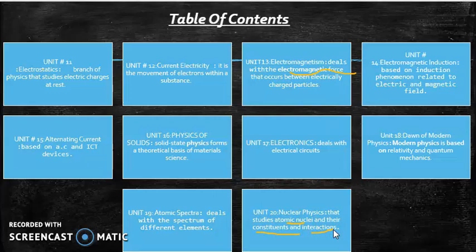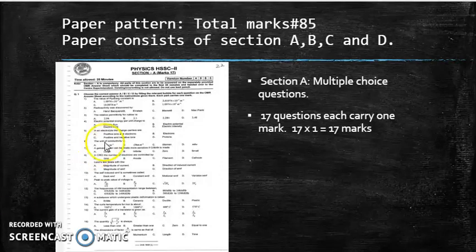This is a short summary of your book. Now we have to move forward toward paper pattern. Your theory paper carries 85 marks and paper consists of 4 sections that are A, B, C and D.